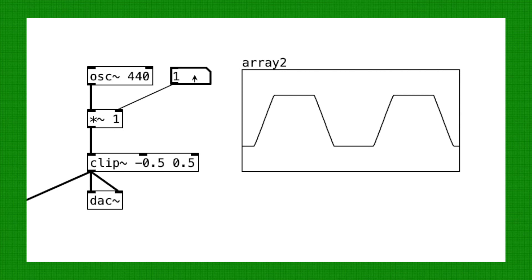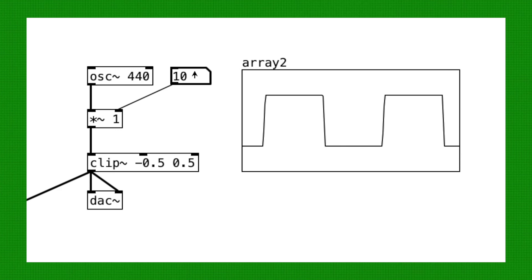We can control the amount of distortion by adjusting the gain. Notice how the waveform becomes more square as we increase the gain? This indicates that more harmonics are present. And we of course hear the tone becoming brighter as we increase the gain.